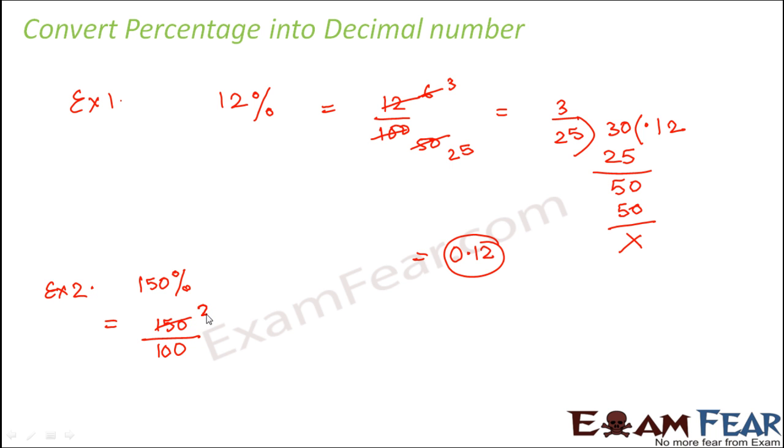Simplifying: 5 goes into 150 thirty times, and into 100 twenty times. So 30 by 20. Further simplifying: 10 goes into 30 three times and into 20 twice. So 3 by 2.